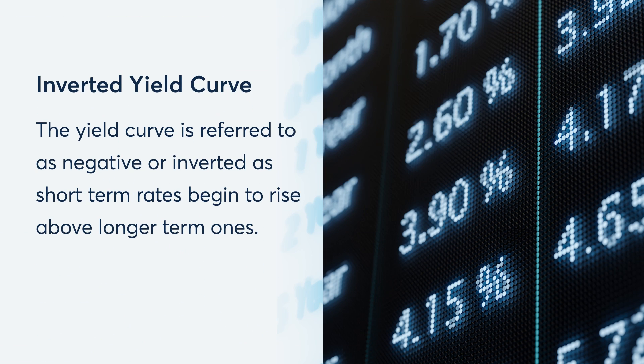The U.S. Treasury yield curve, measured by two-year versus 10-year, has been inverted since July of 2022. An inversion is the somewhat unusual occurrence of long-end rates being lower than short-end rates, and it's usually a precursor to an economic recession.